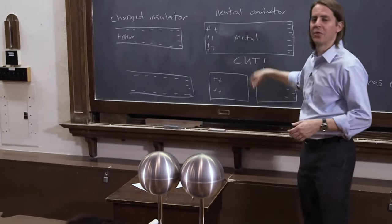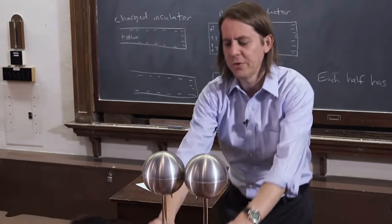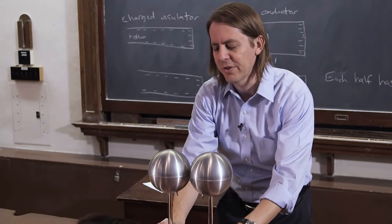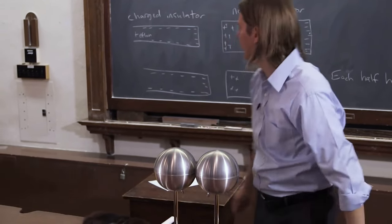When we move them later, that's a way to cut them. We don't really have to cut them, we just separate them. But when they're touching, the conductance across that gap is pretty good, so we think of it as one piece of metal.